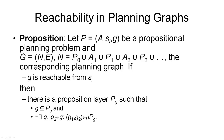One of the issues with the planning graph is that it is really an infinite graph, because we've never established where we need to stop generating action and proposition layers — in theory, this sequence could just go on and on. This proposition tells us when we can stop expanding the planning graph and do something else instead.